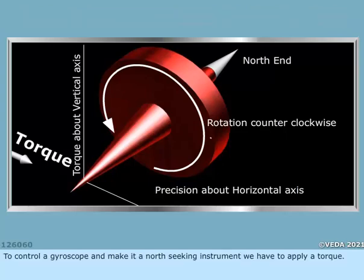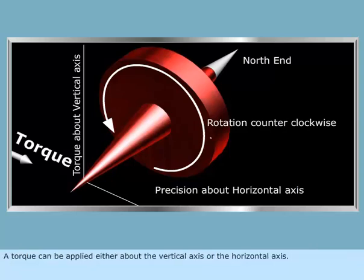To control a gyroscope and make it a north-seeking instrument, we have to apply a torque. A torque can be applied either about the vertical axis or the horizontal axis.